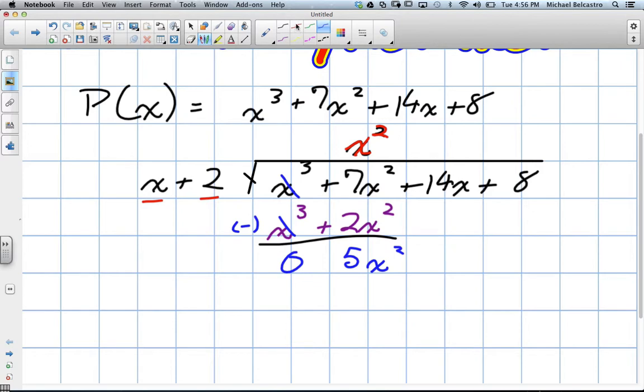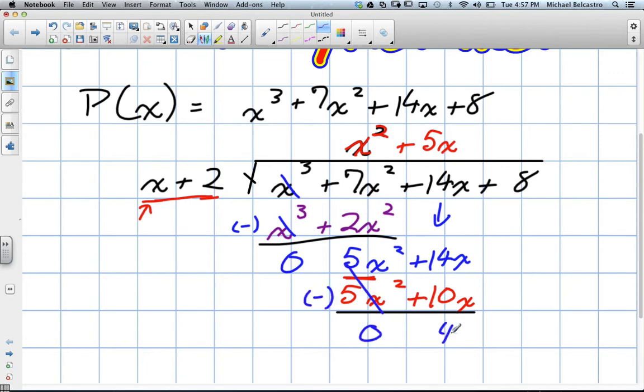Then we have to do the exact same idea. What value do we multiply this by to eliminate our 5x squared? We'd have to multiply by 5x. So we multiply that, we'll get 5x squared plus 10x. We subtract. These cancel out, we have zero. When we subtract these values, we have 4x.